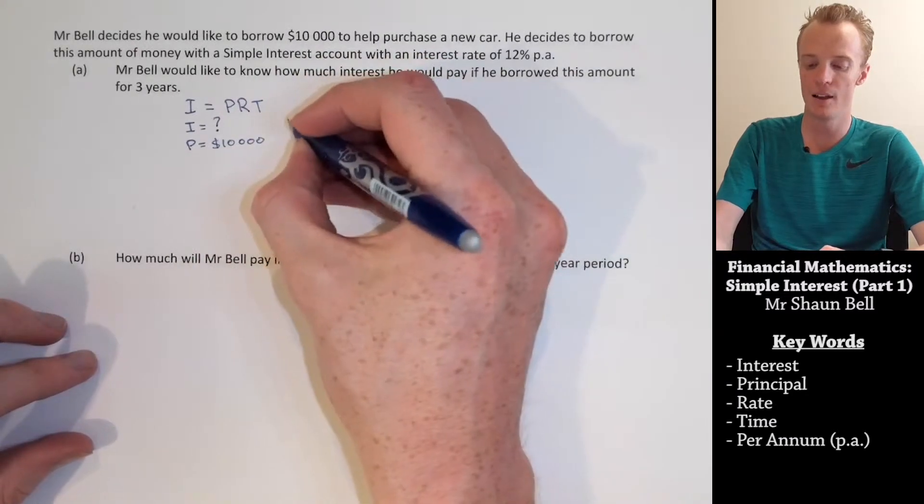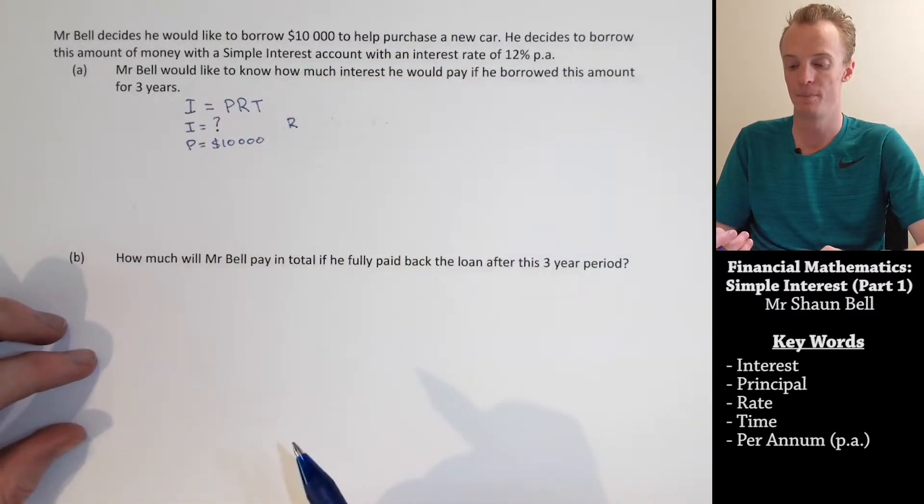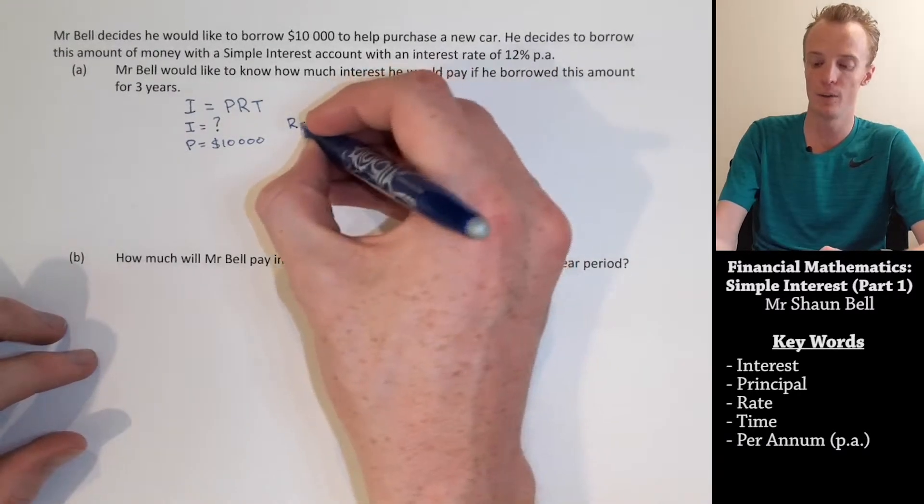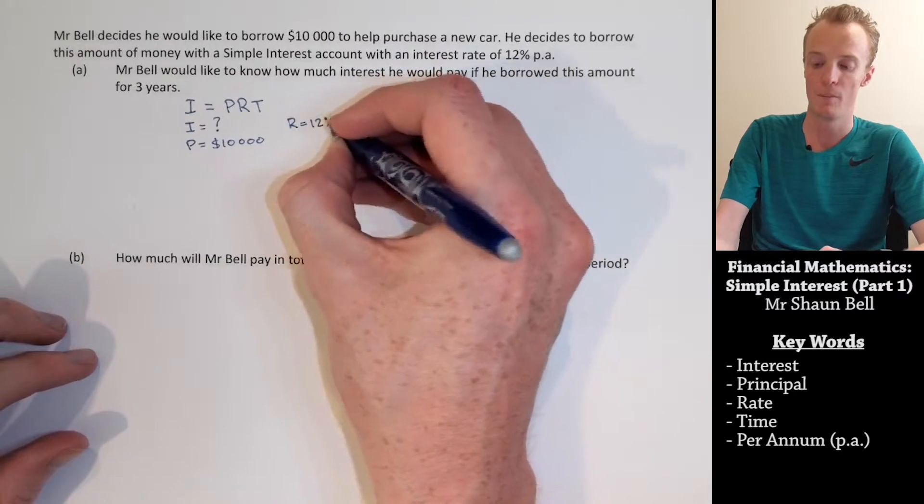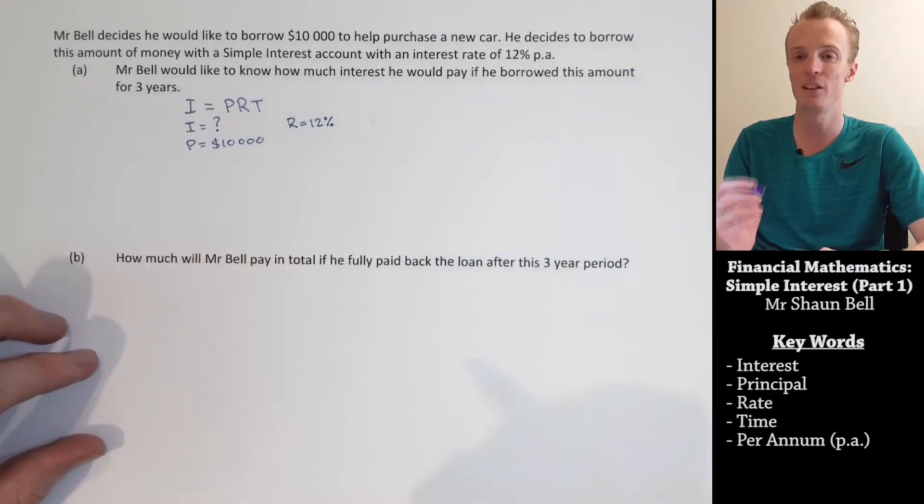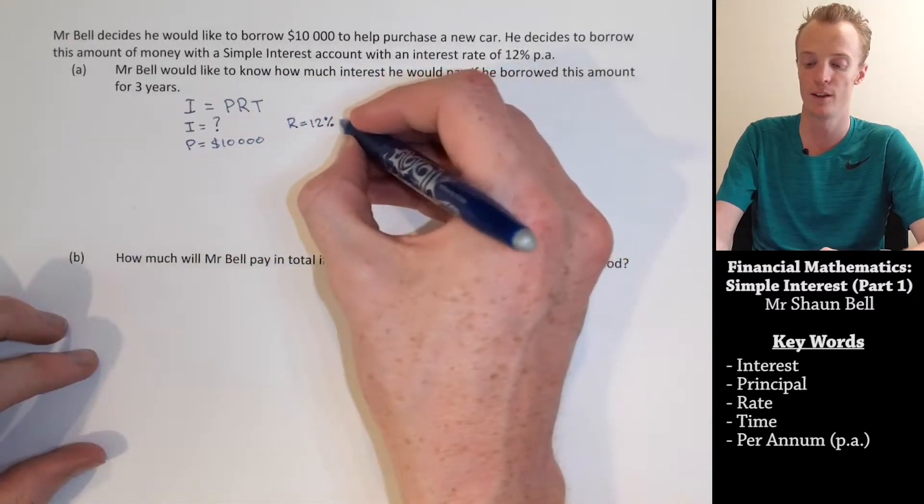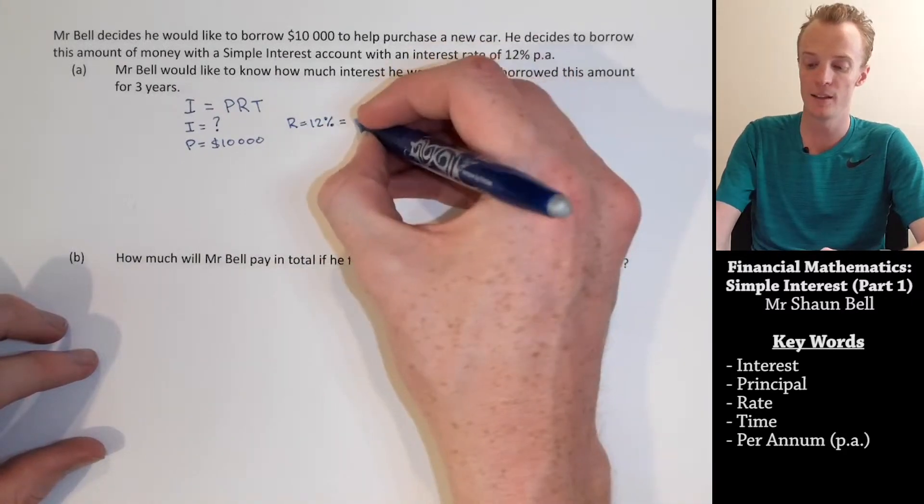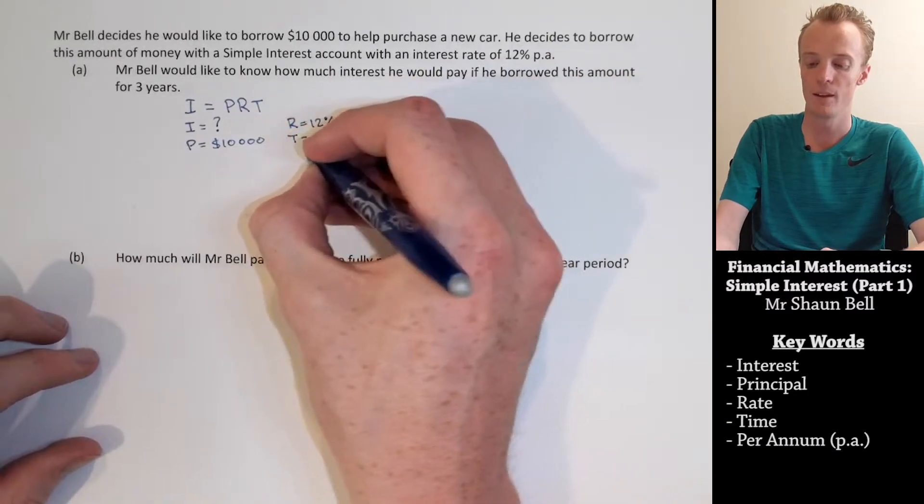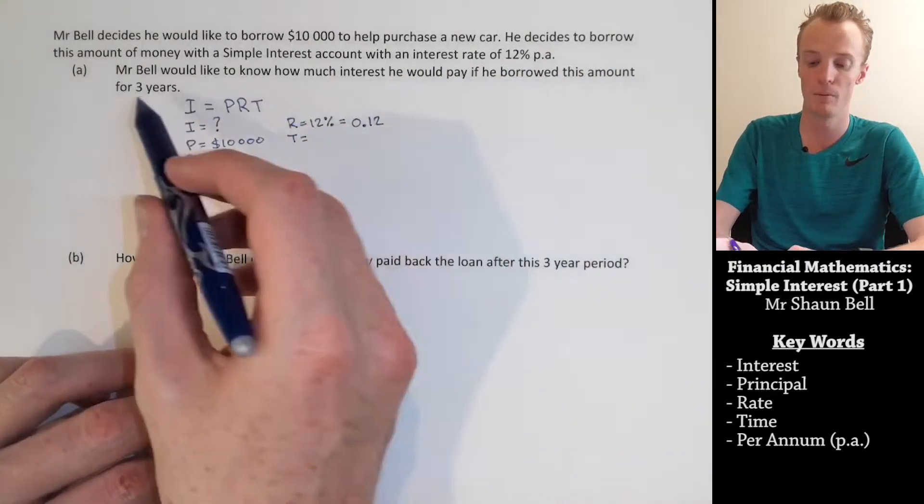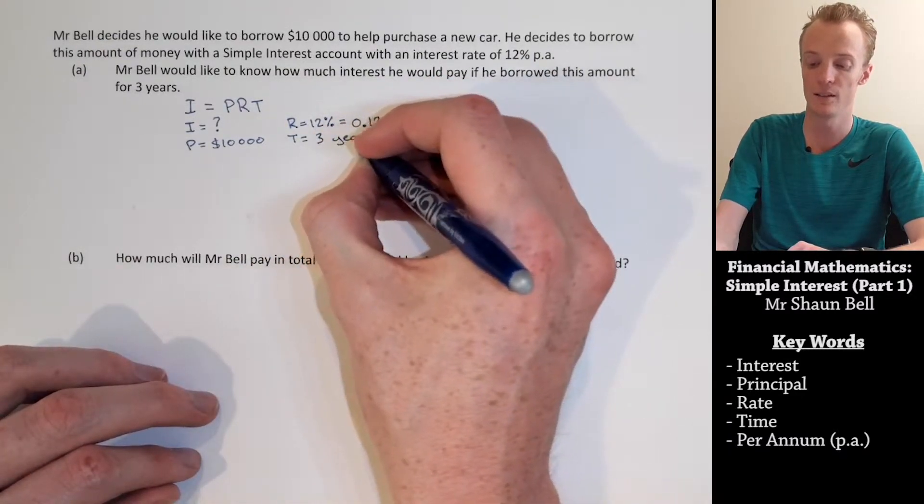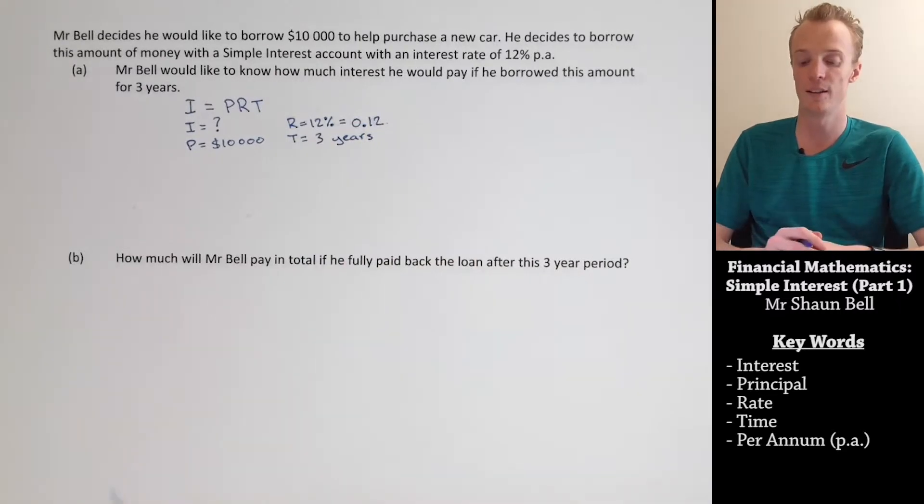Now, the R stands for rate or interest rate. In this case, the interest rate is 12% per annum. So, I record that as 12%. But we need to be careful at this point. If we use the interest rate within this formula, we have to convert it to a decimal first. So, 12% as a decimal is 0.12. Finally, time is equal in this problem to three years. We do have to make sure that the units are in years. Here, it already is. So, we leave it as it is.